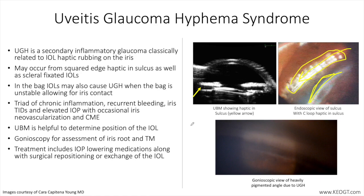UGH syndrome is classically associated with the triad of chronic inflammation, recurrent bleeding, and iris transillumination defects, with associated elevated intraocular pressure and occasional iris neovascularization and cystoid macular edema. The patient may present with complaints of episodic blurring of vision due to repeated hyphemas, photophobia, red eye, and pain.